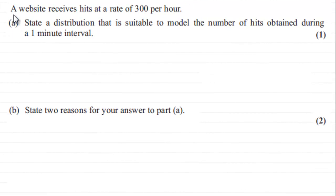Hi. Now, in this part of the question, we're told that a website receives hits at a rate of 300 per hour. And we've got to state a distribution that is suitable to model the number of hits obtained during a one minute interval.